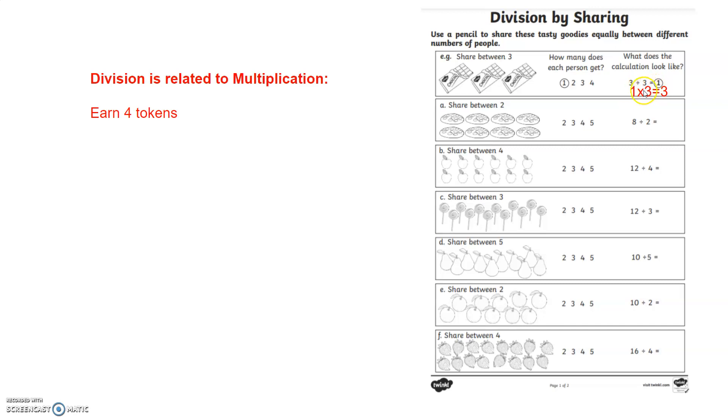All you have to do is in reverse, reverse meaning, look at this, the answer goes here, one, and instead of divide, you're going to put times three. So one times three equals three. And then it will help you see the connection. They are a family, kind of, in a way of numbers. So do this extra step for these problems and you will earn four tokens.